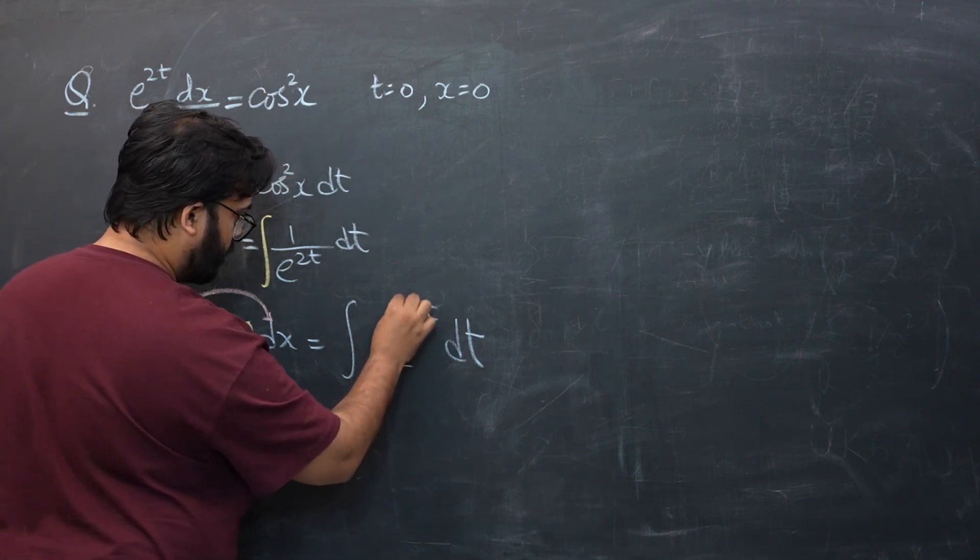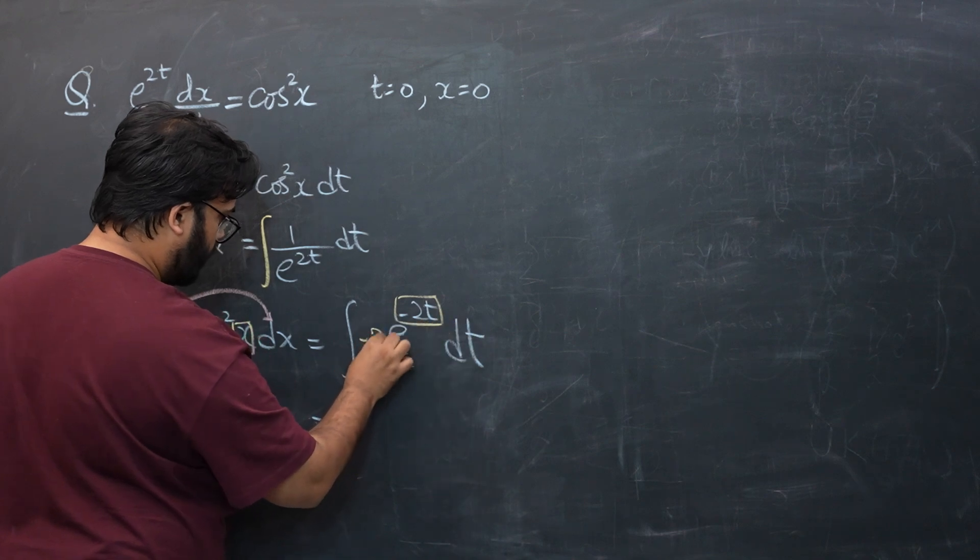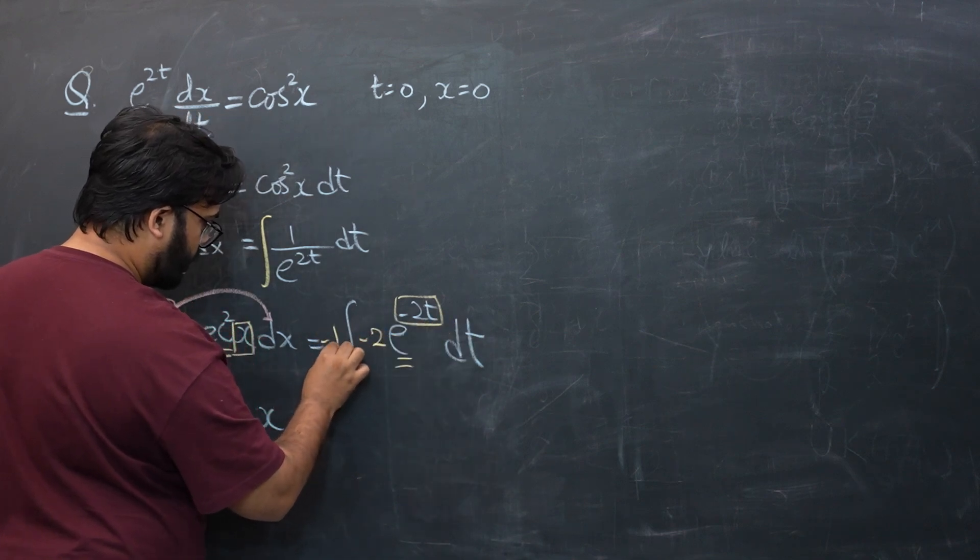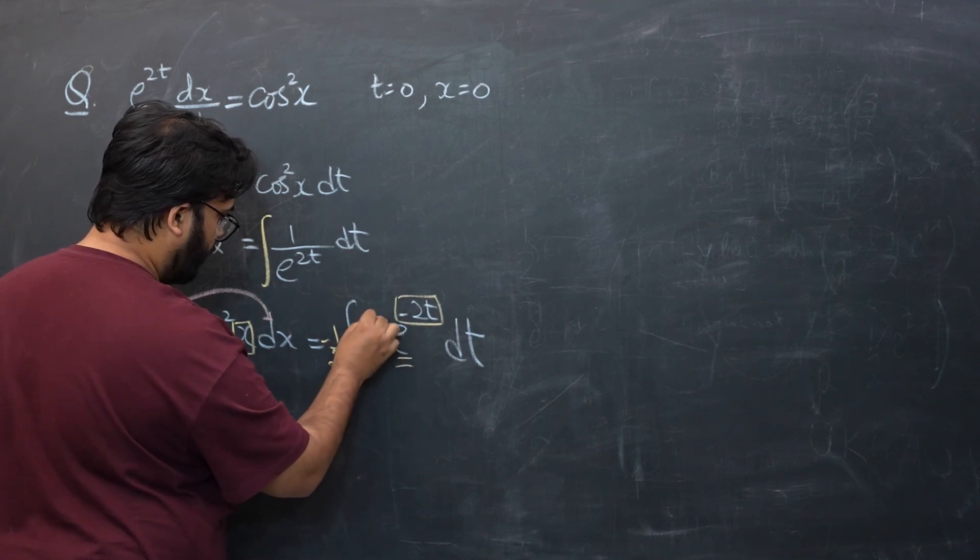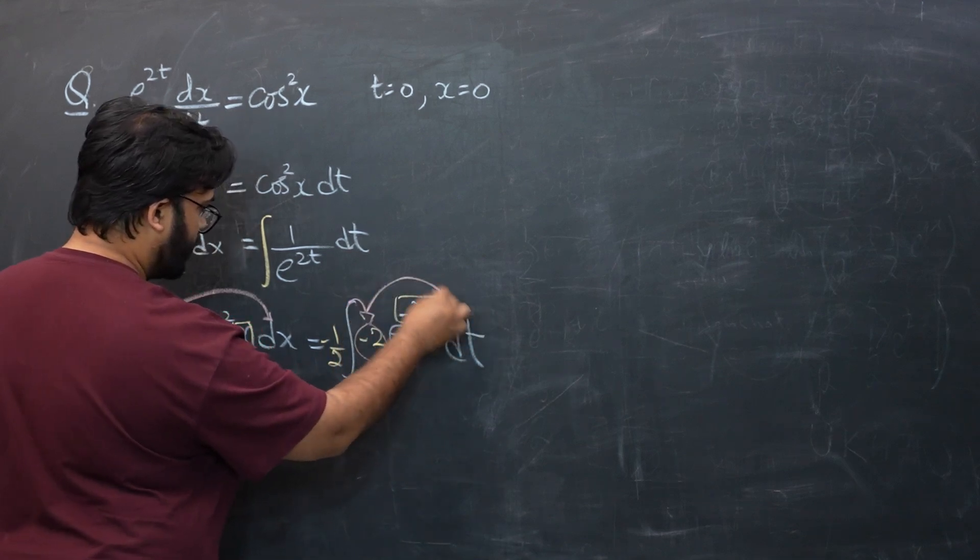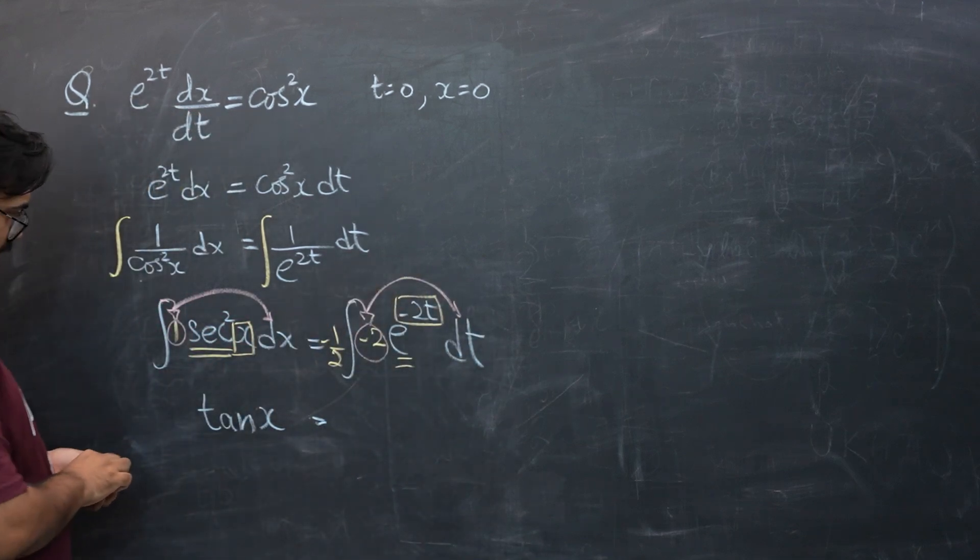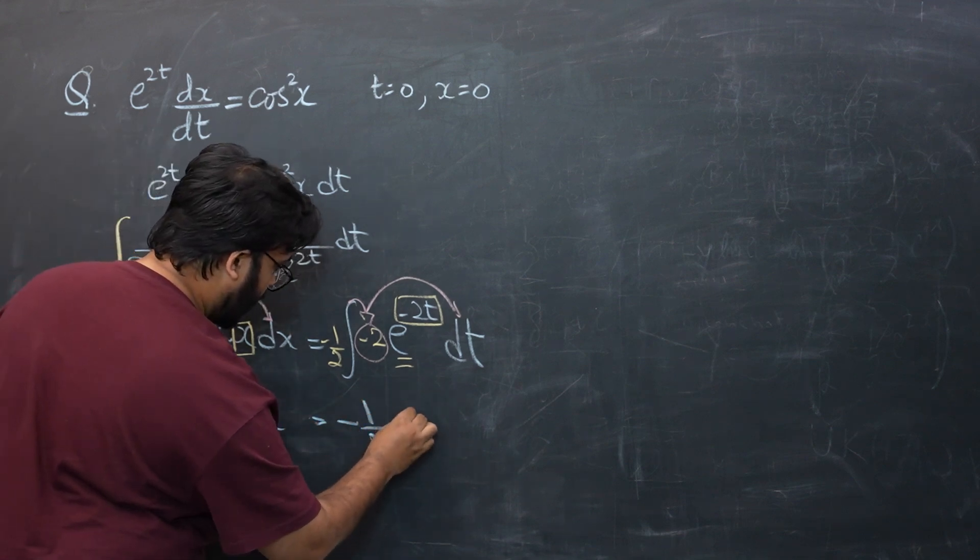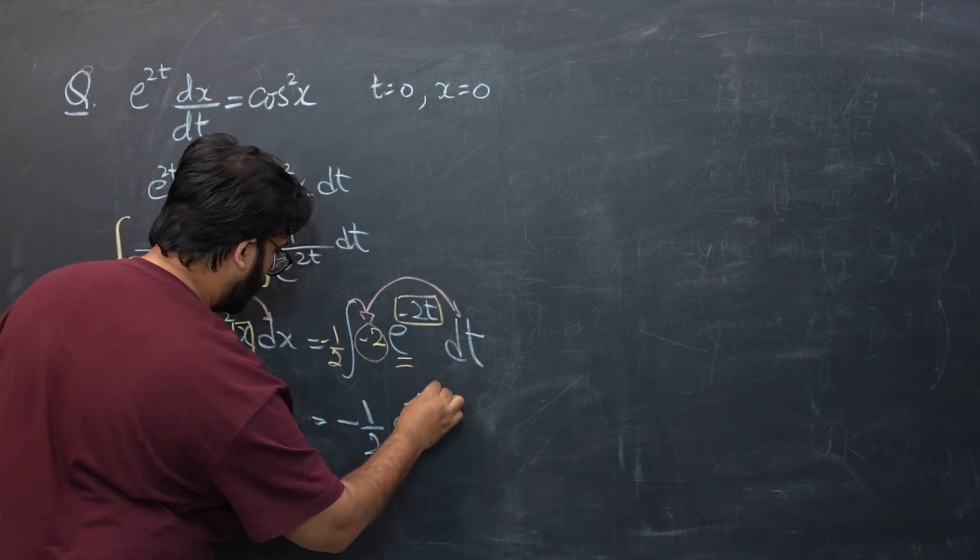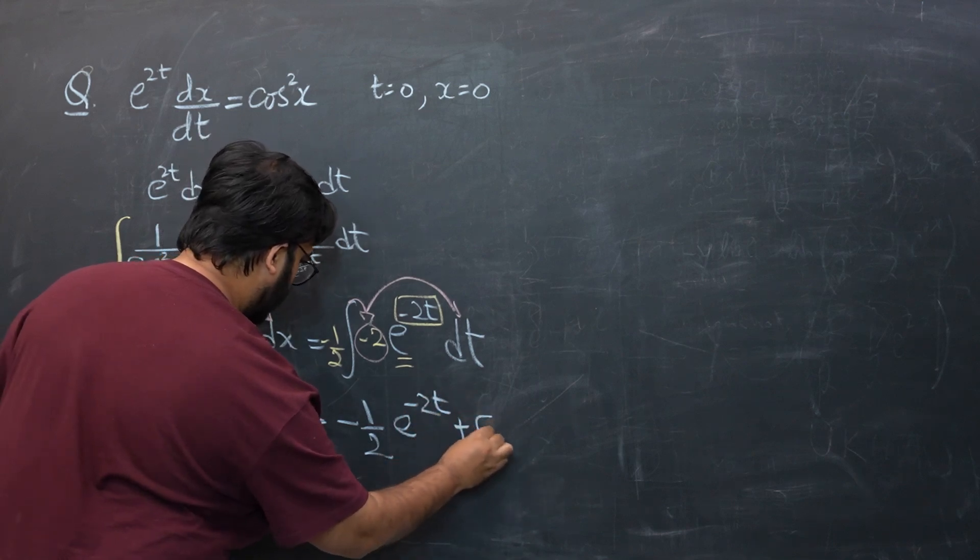That is pretty straightforward. So for e as an operator, the box is -2t. I need -2 over here so I'm going to plug in -1/2 outside. Once the differentiation of box is removed along with the integration signs, the integration of e would be -1/2 e^(-2t), and do not forget the constant of integration over here.